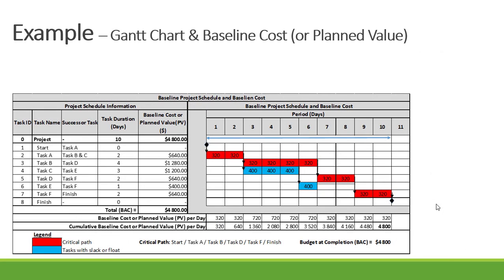Let's prepare our Gantt chart. The start milestone is connected to task A; task A is connected to task B and C; task B is connected to D; task D is connected to F; and F is connected to our finish milestone. That is our Gantt chart with our critical path: A, B, D, and F — shown in red. The tasks in blue are tasks that have float.